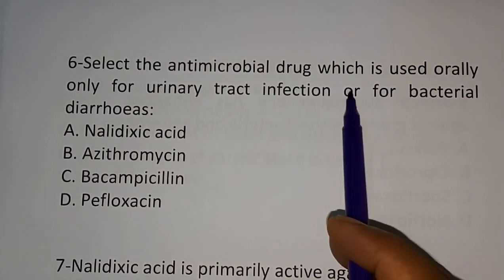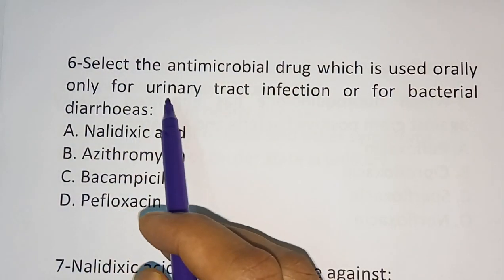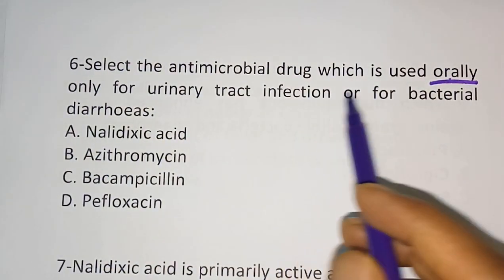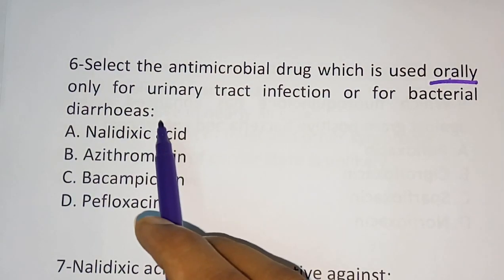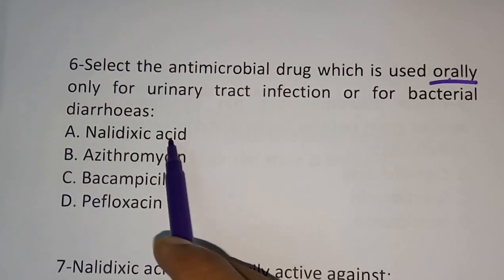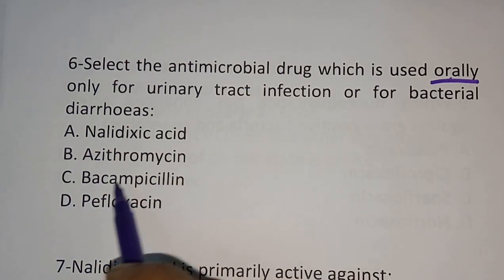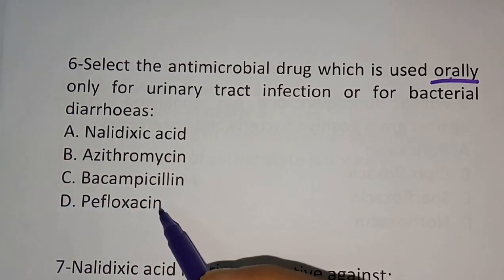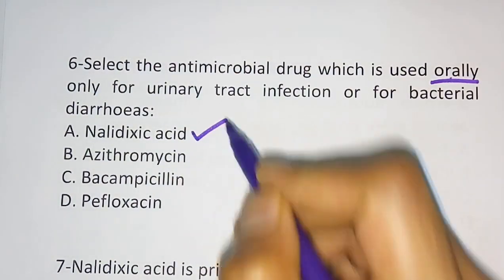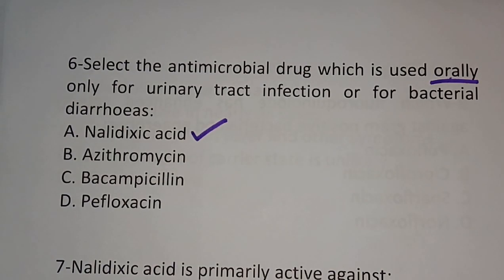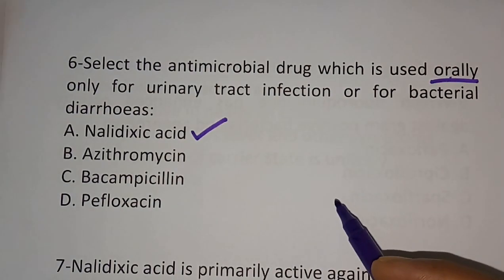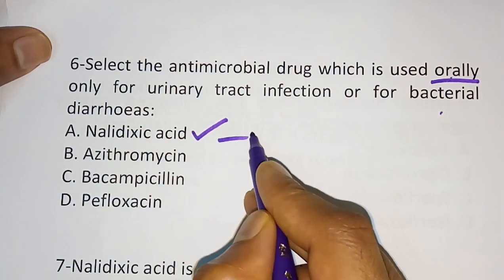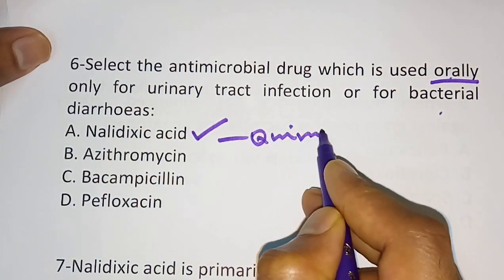Question six: select the antimicrobial drug which is used orally only for urinary tract infection or bacterial diarrheas. Options are: nalidixic acid, azithromycin, bacampicillin, pefloxacin. The correct answer is nalidixic acid.